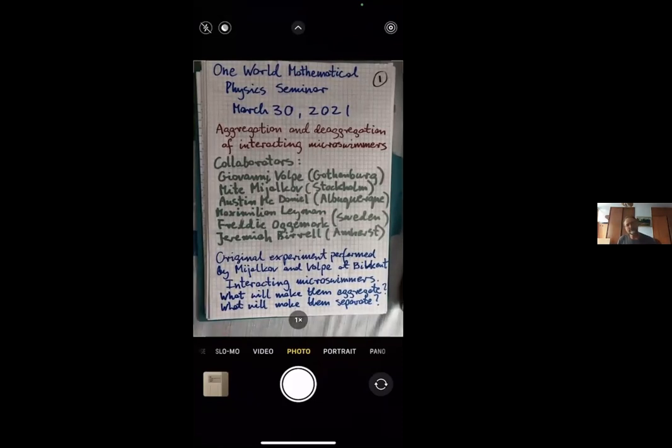This was an extended project with several collaborators ranging from mathematicians and mathematical physicists to experimental physicists. The original idea belongs to Giovanni Volpe, currently at the University of Gothenburg running a soft matter lab, who initiated this work when he was at Bilkent University in Turkey.